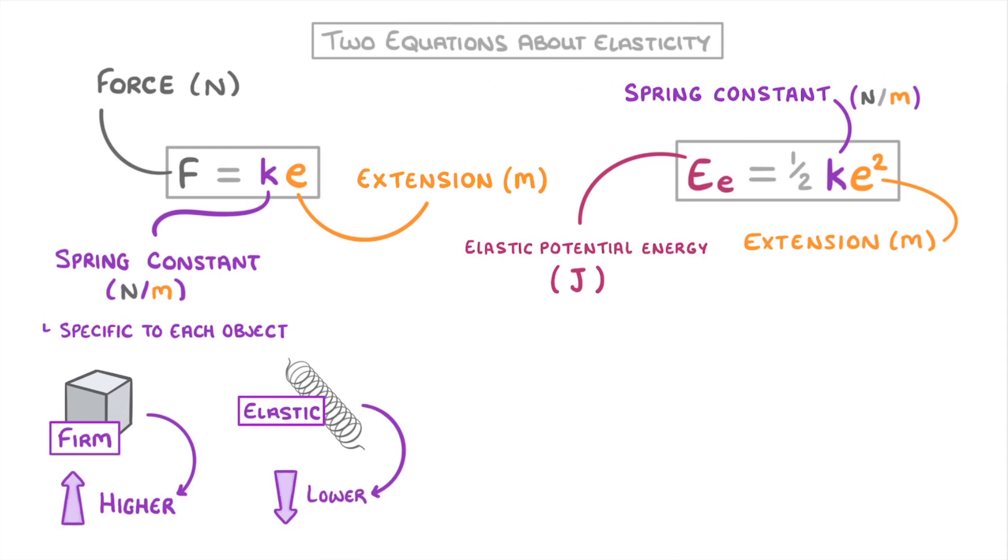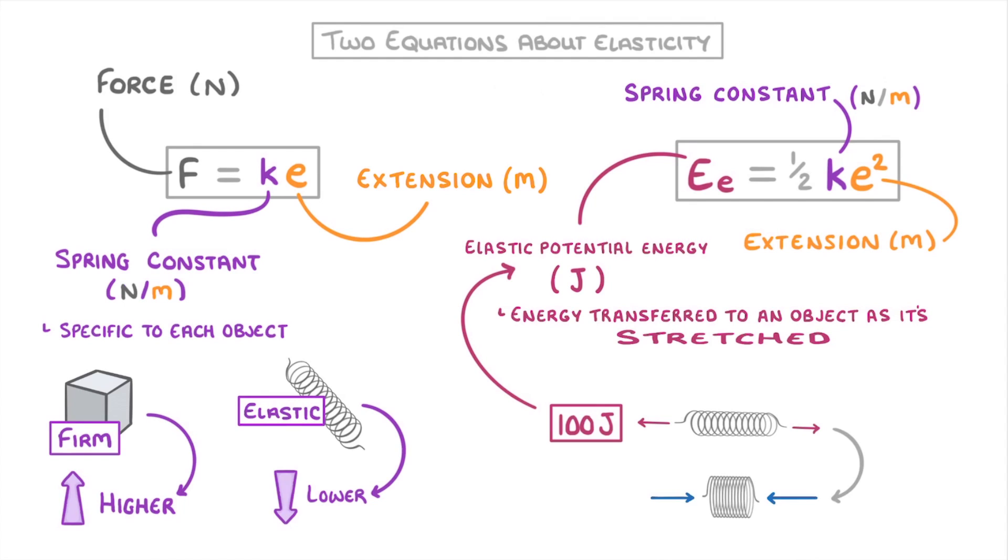You can think of elastic potential energy as the energy transferred to an object as it's stretched. So if you used 100 joules of energy to stretch a spring, then the 100 joules would be transferred to the spring's elastic potential energy store. And then when you let it go and it springs back, it will transfer that 100 joules back out to a different form, like kinetic energy.